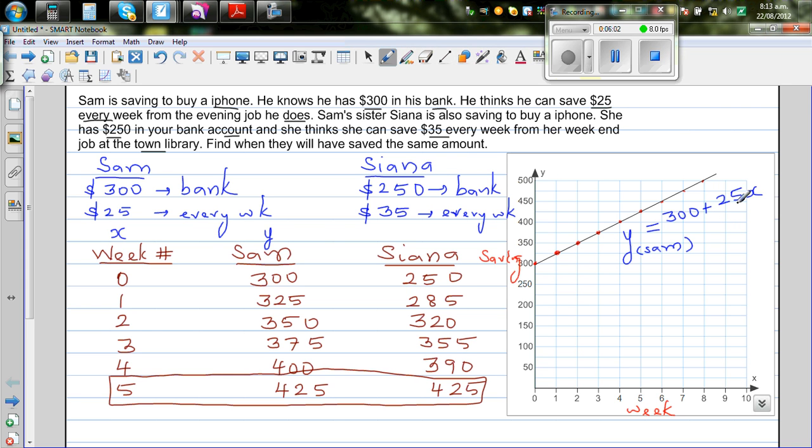25 times 0 is 0. So when x is 0, y is 300. When x is 1, y is 325 and so on. So this is the graph of Sam.